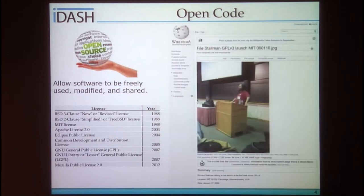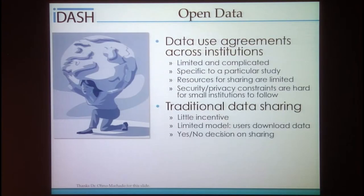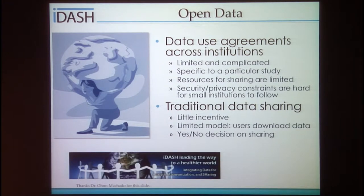Since the GNU project and the Open Software Foundation, there have been many different open source licenses developed. On the other hand, open data has encountered many difficulties — there's little incentive, limited models to implement, and binary decisions to make.